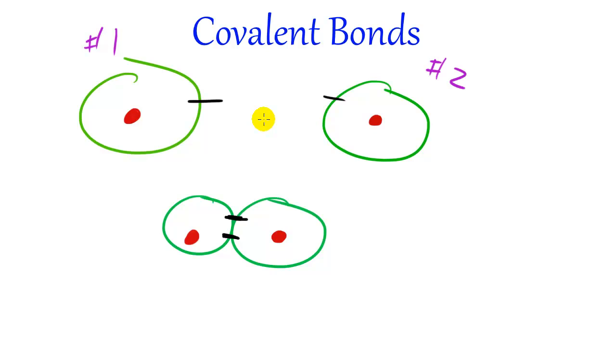So that way, whenever they share their electrons, the electrons are going to orbit around both the first and the second hydrogen. And that way, both of the hydrogens think that they have their energy levels filled and they both are satisfied.